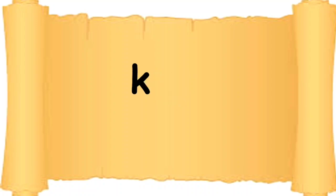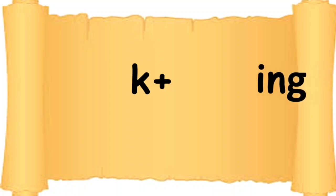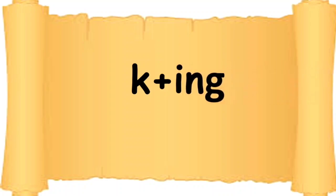Which sound does this letter make? K. Here comes plus, and then comes 'ing.' K plus ing — so we get the word: King. K-ing. King.